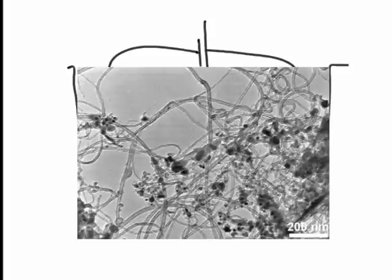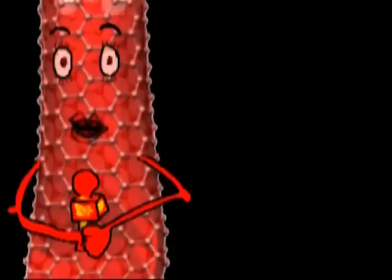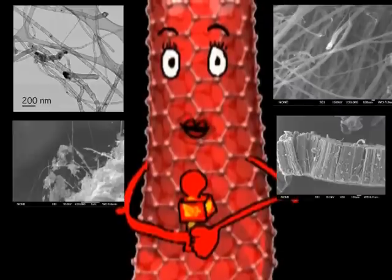They have very few walls, 10 to 15, and are normally bundled together. As you can see, there are different techniques to produce carbon nanotubes, and each technique produces nanotubes of different qualities.